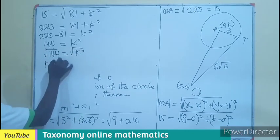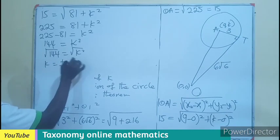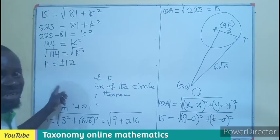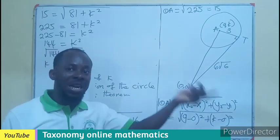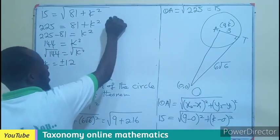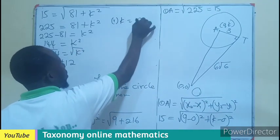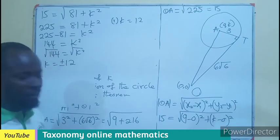K is going to be plus or minus 12. But the question says that K is a positive value. So therefore, for the first part, your K is going to be 12.